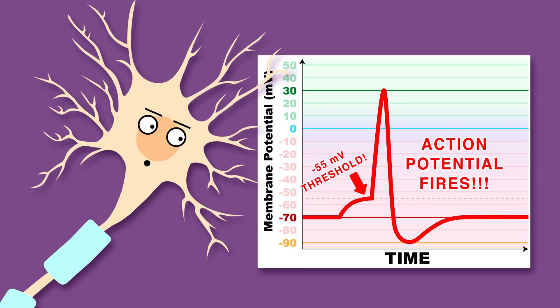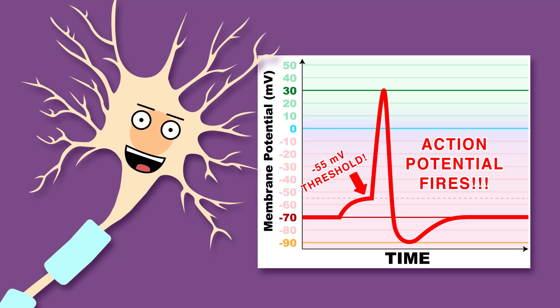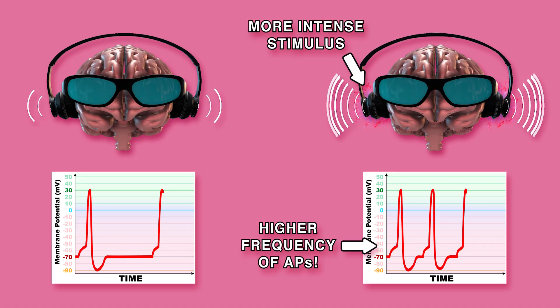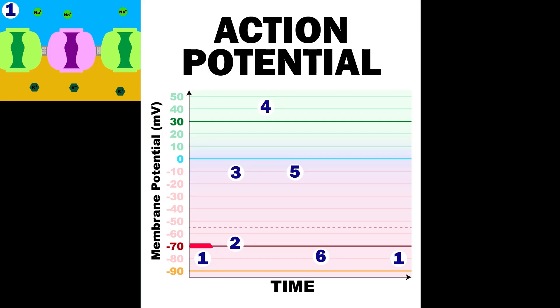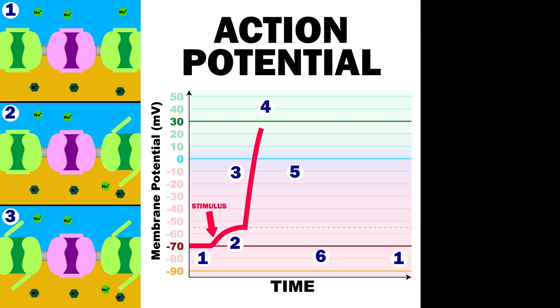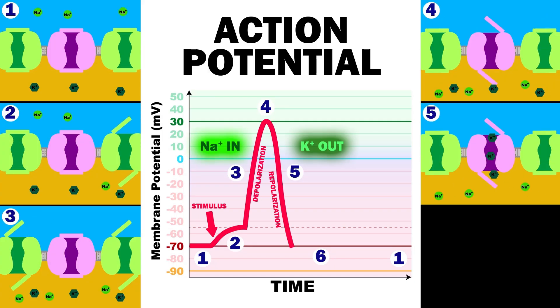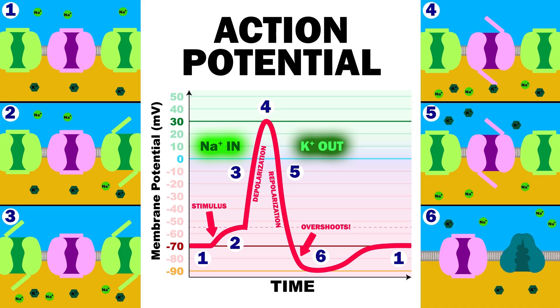Action potentials do not vary in size, but with more intense stimuli, higher frequencies arise. During an action potential, ions flow across the membrane, causing a rapid rise and fall of potential across the membrane.